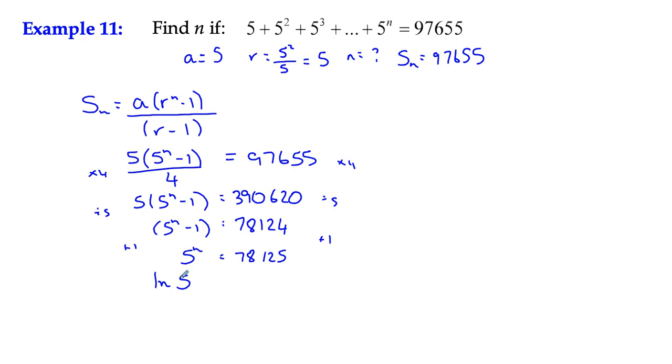So ln(5ⁿ) = ln(78,125). We can use the log rules which say that the index becomes the multiplier at the front. So n·ln(5) = ln(78,125).